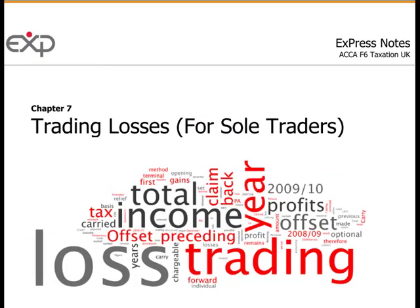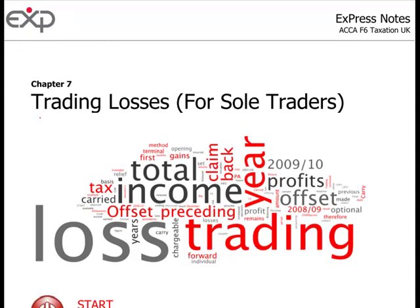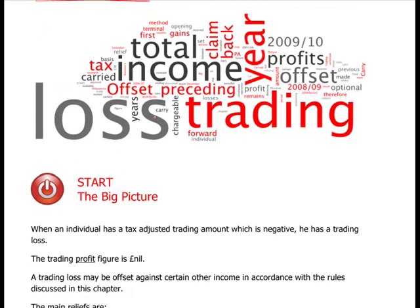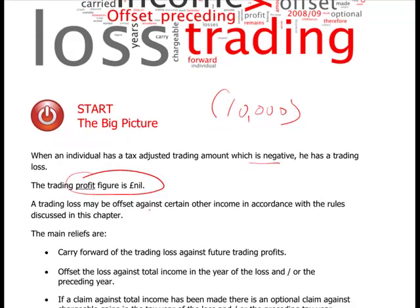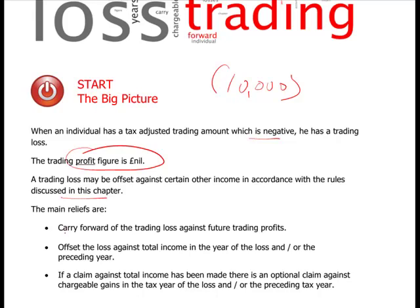Now those rules cover opening, closing, and current year basis. What happens when you make a loss? When an individual has a tax-adjusted trading amount which is negative — a loss of £10,000 — the trading profit is nil. The trading loss can be offset against certain other income. The main rule is you can carry it forward against future trading profits. The trading loss from selling widgets must go against future trading profits from selling widgets — you can't offset against a different type of profit.